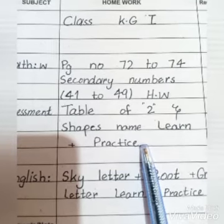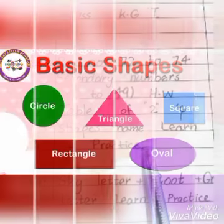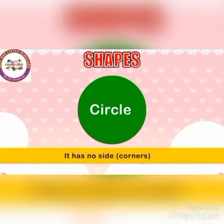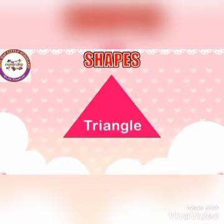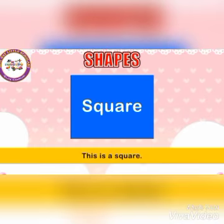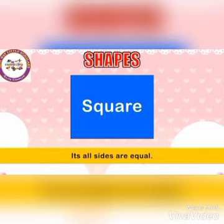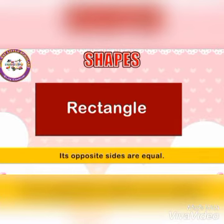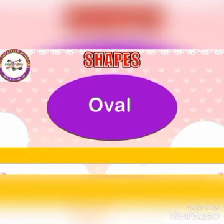Next, we will learn shapes names. Basic shapes: Circle — this is the circle, it has no sides. Triangle — this is a triangle, it has three sides. Square — this is a square, it has four sides and all sides are equal. Rectangle — this is a rectangle, it has four sides and its opposite sides are equal. Oval — this is an oval, it has no corner.